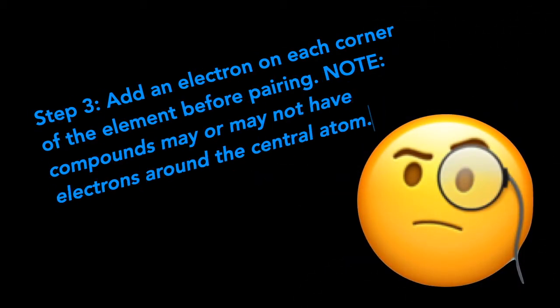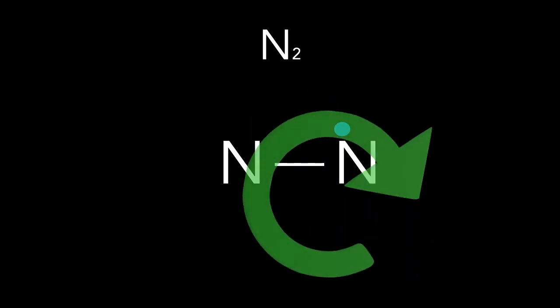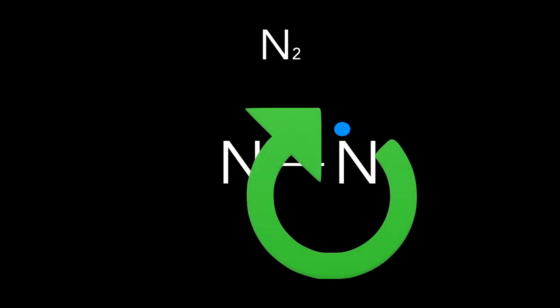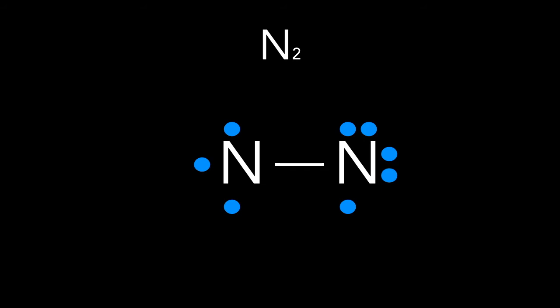Step three: add an electron on each corner of the element before pairing. Note: compounds may or may not have electrons around the central atom. We already have two valence electrons in that single line. Let's place the valence electrons around each side going clockwise before pairing. We count up to ten valence electrons around N2.